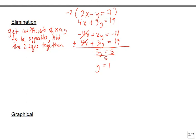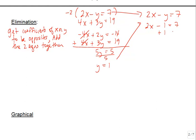Once we know y, we substitute it back into one of our original equations. I'll use the top equation since it looks simplest. Substituting y equals 1: 2x minus 1 equals 7, so 2x equals 8, divide by 2, and we get x equals 4. Same solution as before: the ordered pair 4 comma 1. The elimination method works especially well when your system is already lined up with x's, y's, and constants in order.